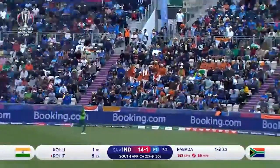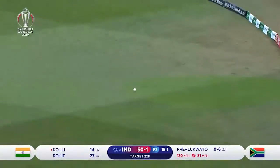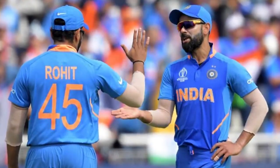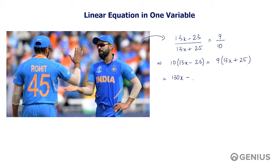Let's see a final example of a linear equation in one variable. Both Rohit Sharma and Virat Kohli are amazing batsmen. During a tournament, their total scores were in the ratio 9:10, such that (13x − 23) / (13x + 25) = 9 / 10. Cross-multiplying gives 10(13x − 23) = 9(13x + 25). Solving this, we get 130x − 117x = 230 + 225, so 13x = 455.